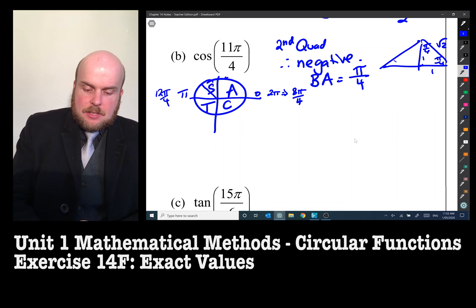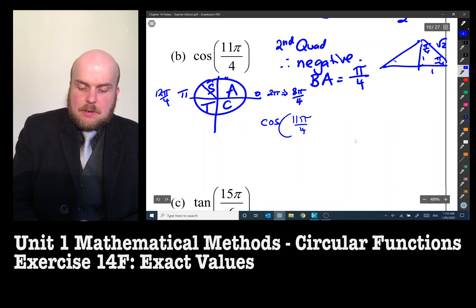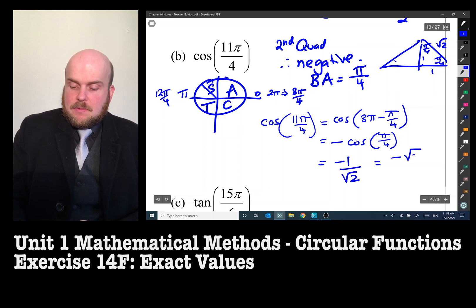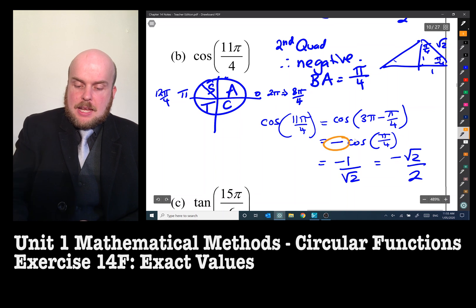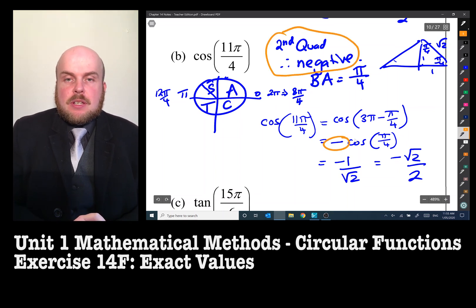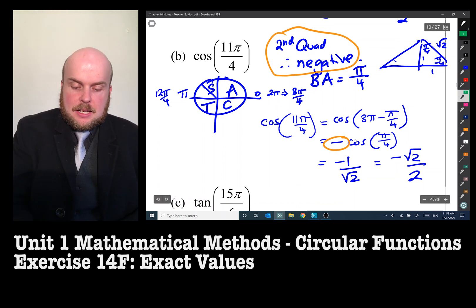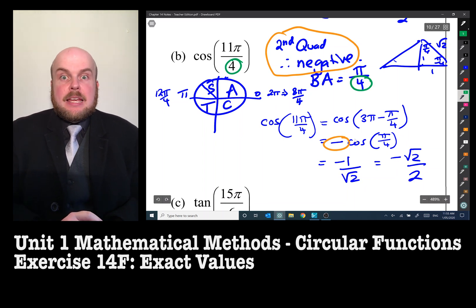So I know that cos 11 pi on four is equal to cos—and what did we say it was—three pi minus pi on four. And because it's negative, it's going to be equal to negative cos pi on four, which is equal to negative one over root two, which you can also write as negative root two over two. So that negative came from the fact that it was in the second quadrant. In the second quadrant, it's negative. The pi on four came from the fact that it's got a denominator four here. That's the usual key clear giveaway.